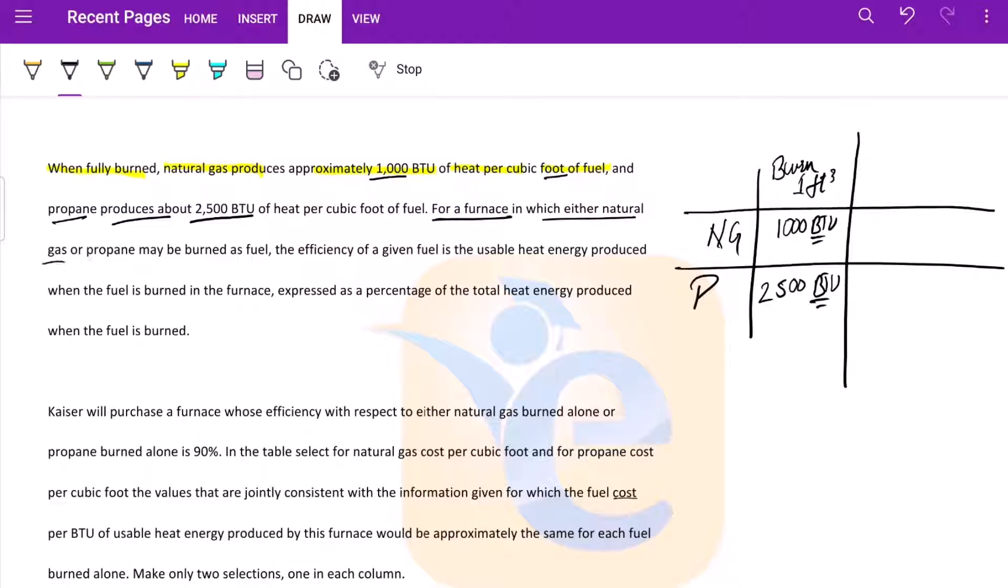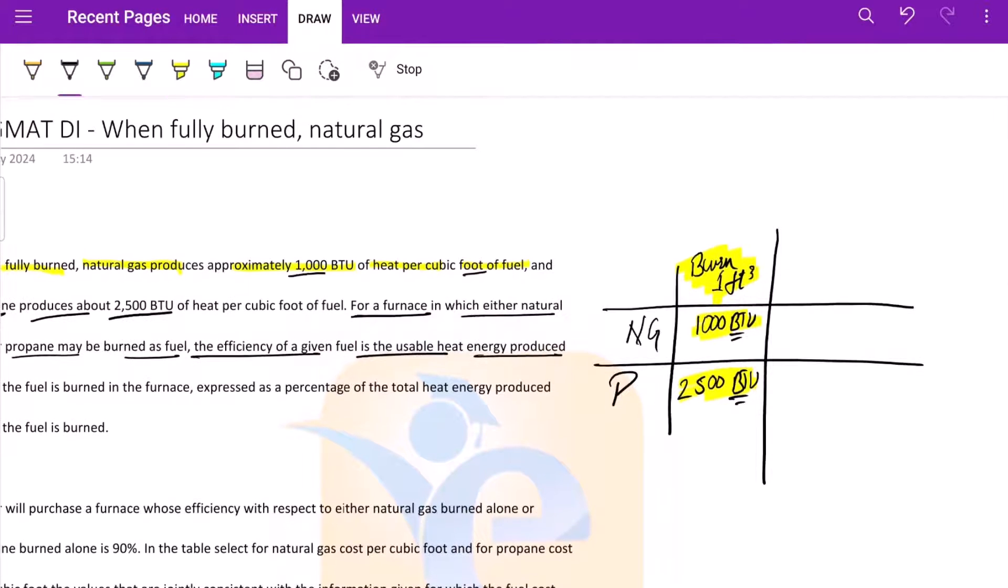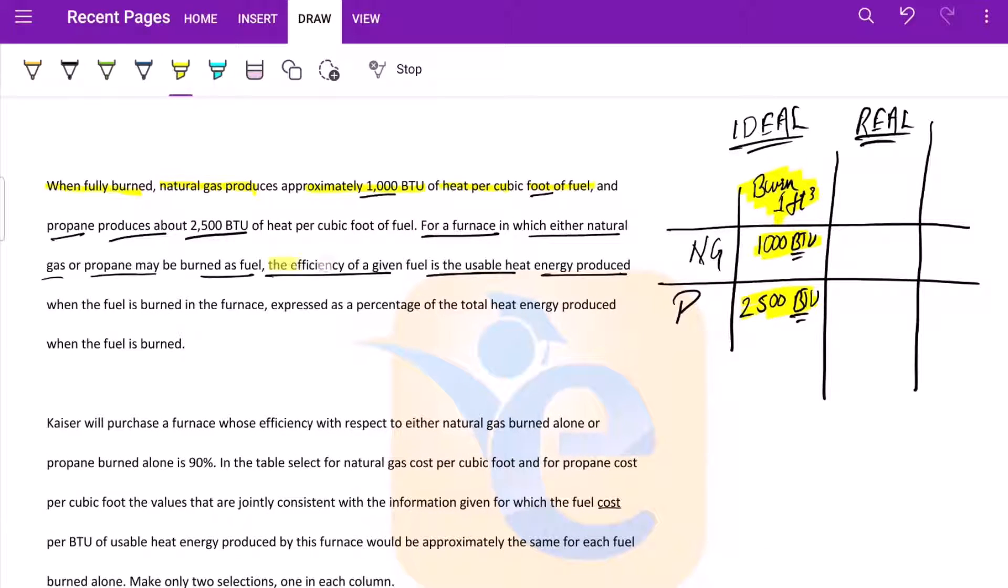For a furnace in which either natural gas or propane may be burned as fuel, the efficiency of a given fuel is usable heat energy produced. So if we burn ideally, we should be getting this much heat energy in an ideal world, but in the real world we'd be getting a bit less, and that is the efficiency we're talking about. This is the usable heat, not the entire heat produced.